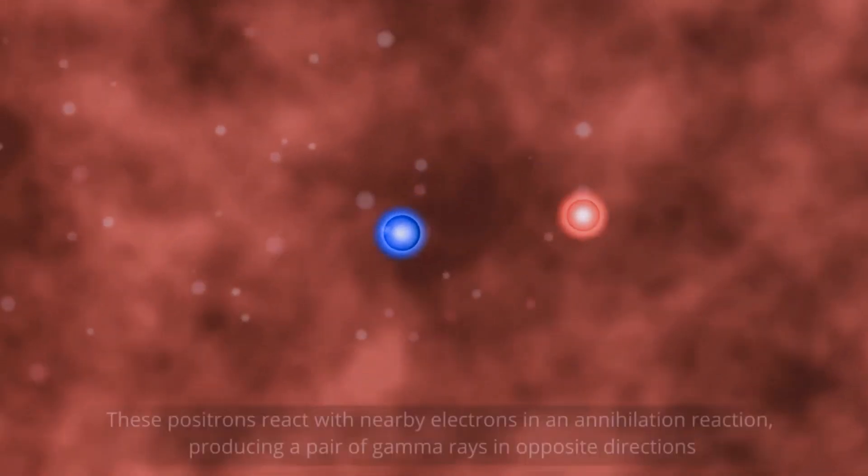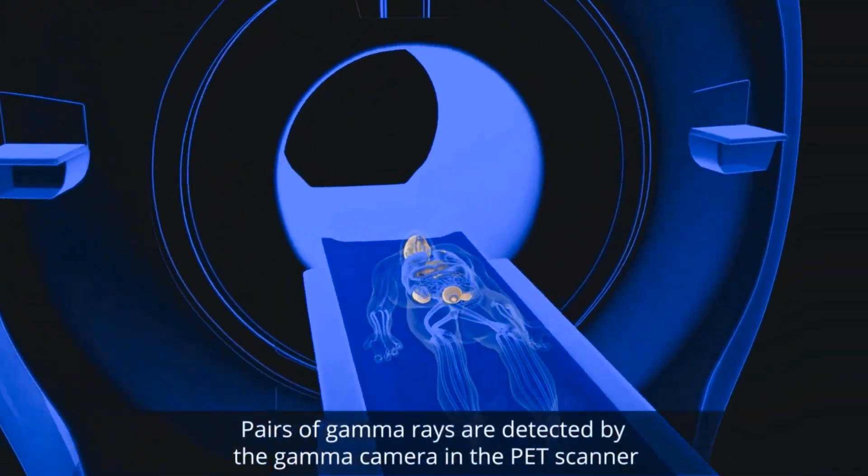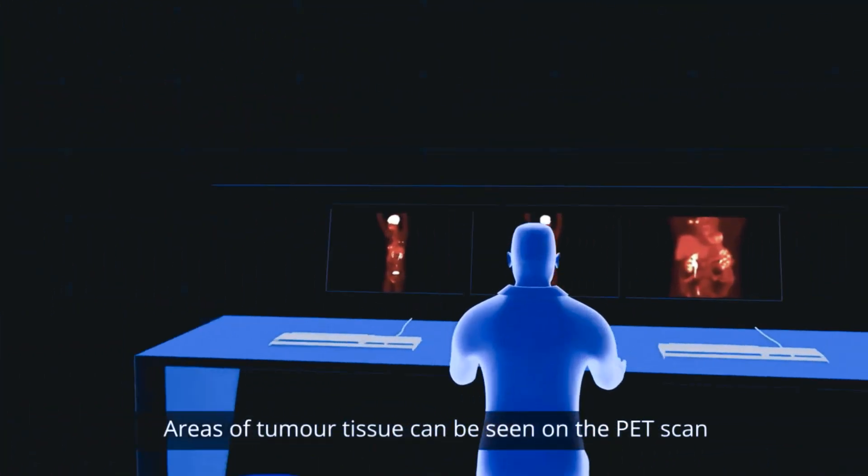As it decays it emits a positron, which promptly combines with a nearby electron resulting in the simultaneous emission of two identifiable gamma rays in opposite directions.